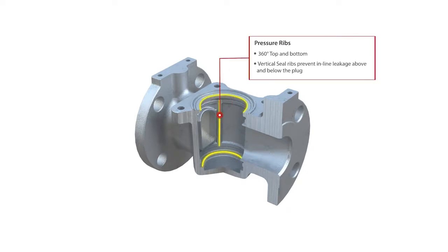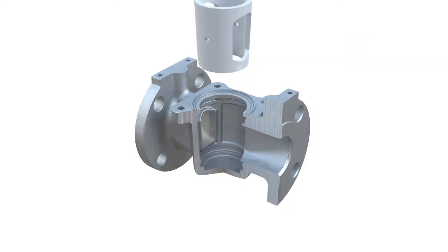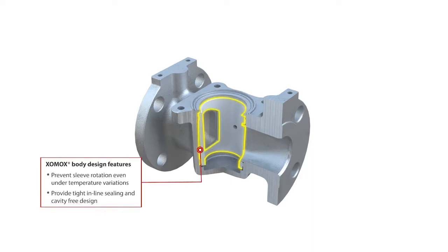Horizontal and vertical ribs in the body enable strong sealing capabilities between the sleeve and the plug, creating compression that is needed to maintain the sleeve in place. These, combined with the 360-degree ribs top and bottom, lock the sleeve in a specific position.